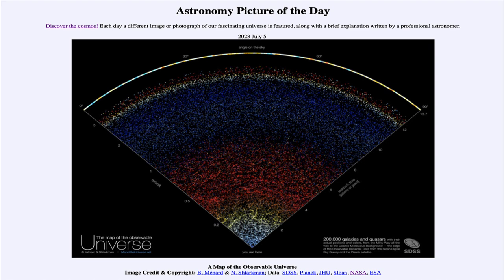Now when we look around the top, we see the angle on the sky. So we're looking at about a 90 degree slice on the sky or about a quarter of the way around the sky.